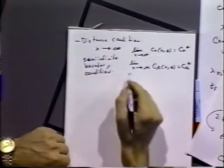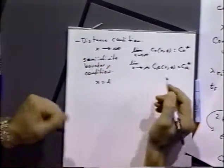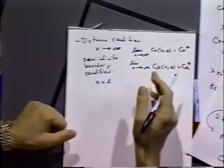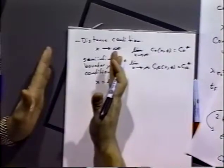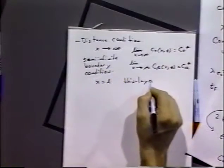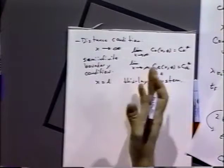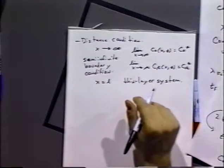Another distance condition might be, for example, at some distance L there is a wall in solution. That would be a thin layer system where instead of an infinite extent of solution, we have a wall where the reaction is occurring. This would be a thin layer system, and it has very different properties from a semi-infinite condition.